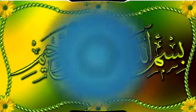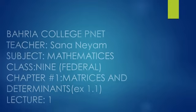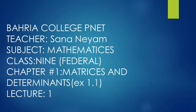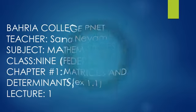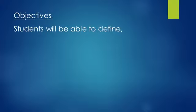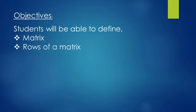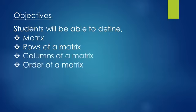Bismillahirrahmanirrahim. Assalamu alaikum, ninth grade students. I'm your math teacher, Miss Sarah Naya. Today we discuss Exercise 1.1 from Chapter One: Matrices and Determinants. The objective of this exercise is that students will be able to define a matrix, rows of a matrix, column of a matrix, order of a matrix, and equal matrices.